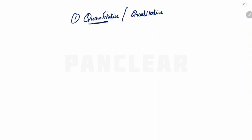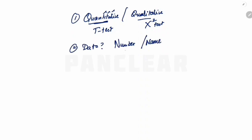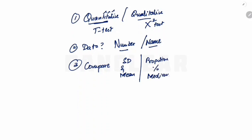So in summary, we have to check whether it is a quantitative test or a qualitative test. Quantitative tests include the t-tests and the ANOVA test. For qualitative tests, remember only one test: the chi-square test. The key distinction is whether the data is in the form of numerical values or nominal categories. In quantitative tests we compare standard deviations and means; in qualitative tests we compare proportions, percentages, or medians.